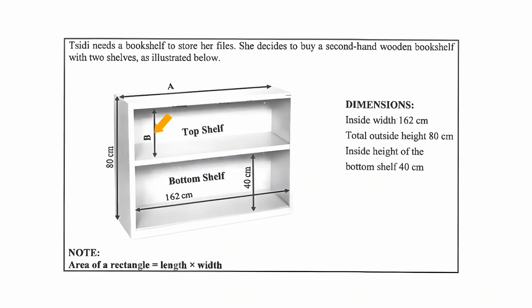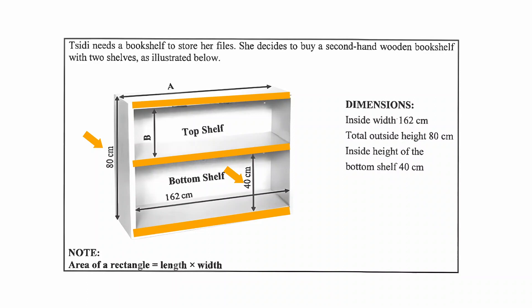Another point to note is that B, which is the height of the top shelf, does not equal 40 centimeters. Remember, 40 centimeters is the height of the bottom shelf. The height B is the difference between the outside height of the bookshelf, the thickness of the top layer of wood, the middle layer of wood, the height of the bottom shelf, and the thickness of the base of the shelf.